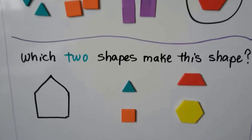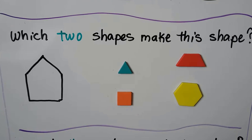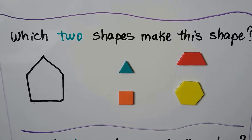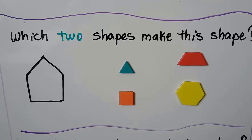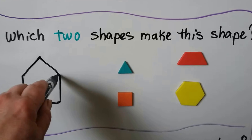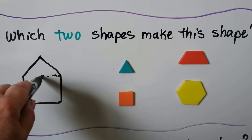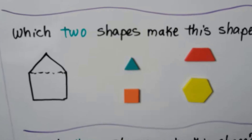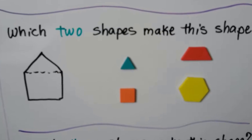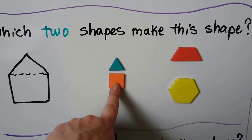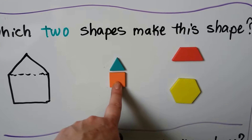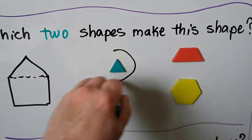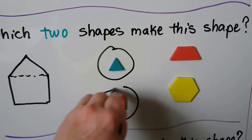Which two shapes make this shape? This kind of looks like a house. If we draw a line, we can see a triangle and a square. If we put these two together, we would make that shape. So we would use this shape and this shape.